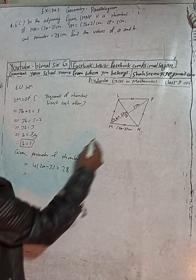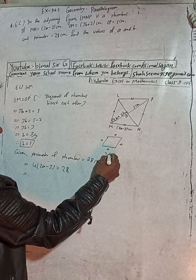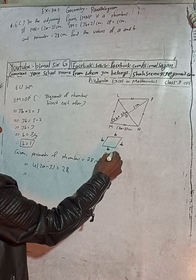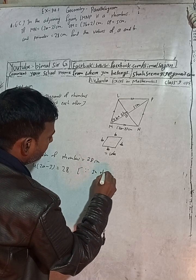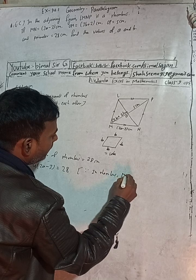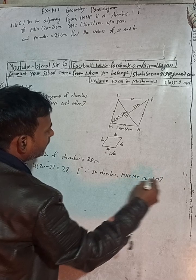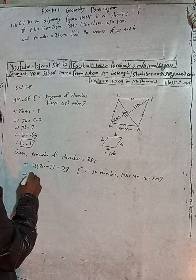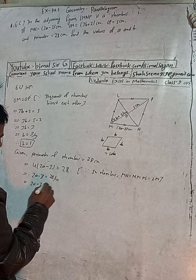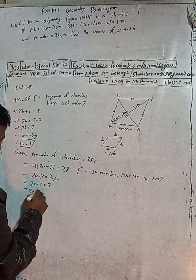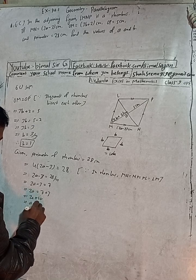In a rhombus all sides are equal, so perimeter equals 4 times the side. Here 4 times (2A minus 3) equals 28. Dividing both sides by 4 gives 2A minus 3 equals 7. So 2A equals 7 plus 3, which is 10. This implies A equals 10 divided by 2, therefore A equals 5.